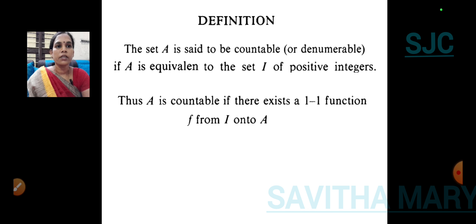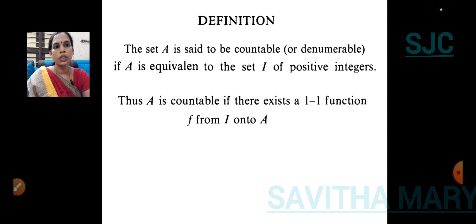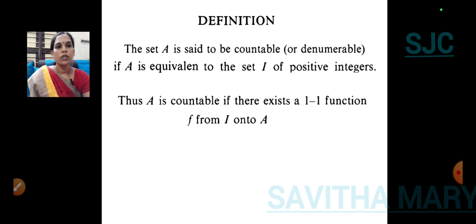A set A is said to be countable if it is a finite set or it is equivalent to the set of positive integers. Equivalent means it is both one-to-one and onto. We use positive integers because when you are counting something, you use the numbers 1, 2, 3, etc. — that is, the natural numbers or positive integers. That is why we use the condition equivalent to the set of positive integers.